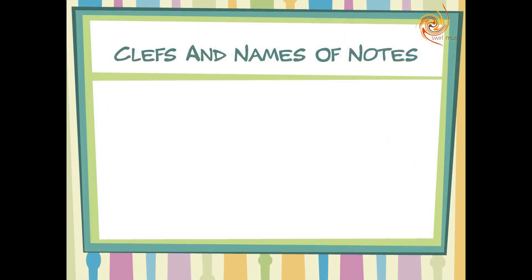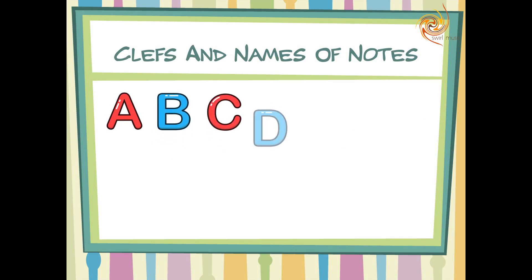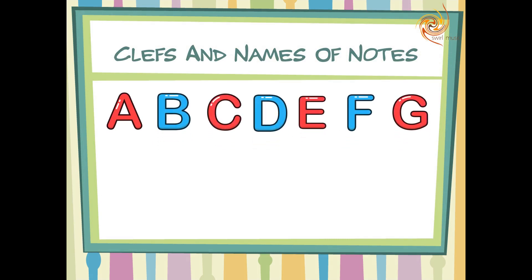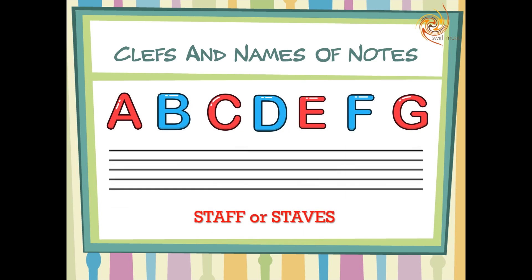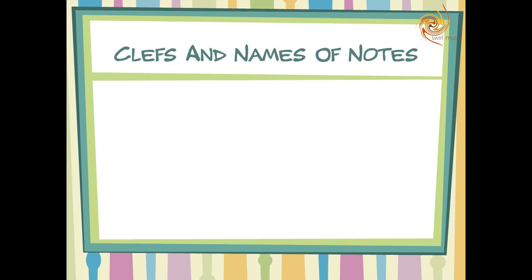We learnt in the earlier video that the names of the notes are the first seven letters of the English alphabet, and that these notes are written on staff lines based on their pitches. But how will we know which note is named after which letter? To help us with that, we have something called a clef.